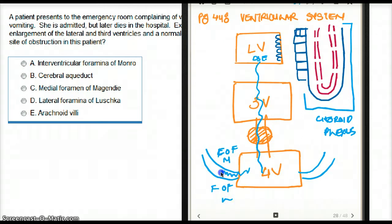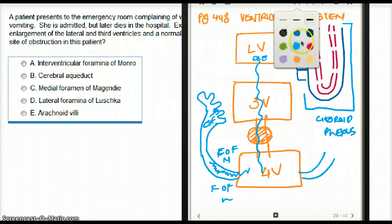So CSF enters the foramen of Magendie and foramen of Luschka, and this CSF then goes to the arachnoid granulations.